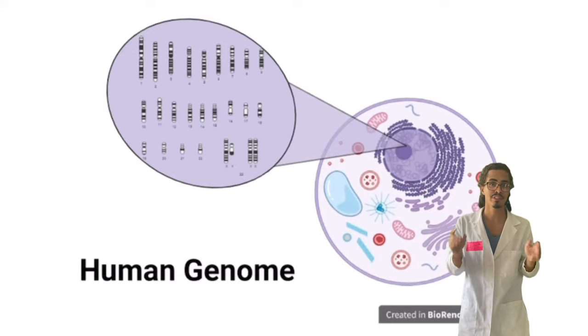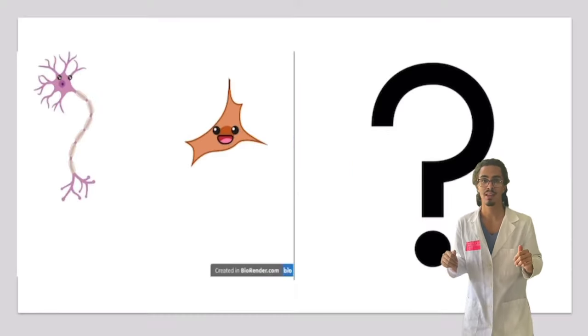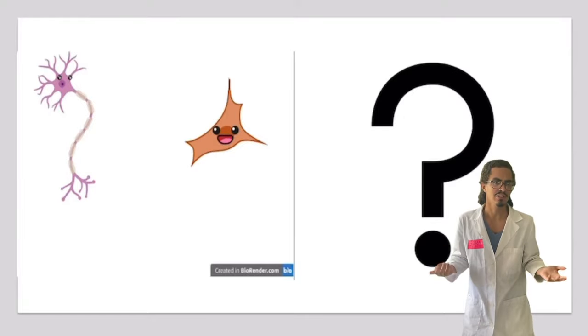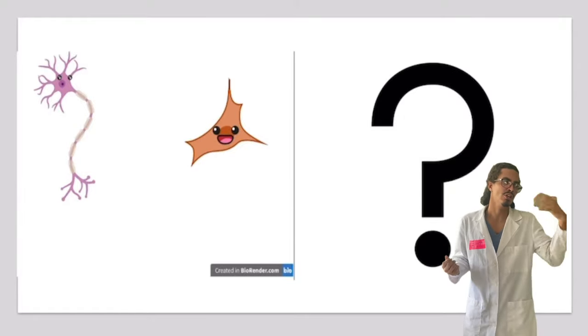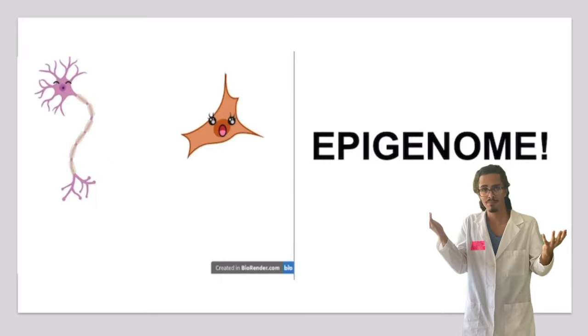But something very important to note is that all of your cells contain the same genome. So if all of your cells contain the same genome, then what makes a nerve cell different from a skin cell? Their epigenome.